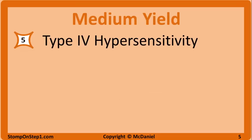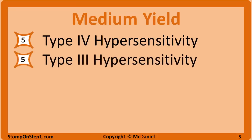Now we're getting into the medium yield topics. With a high yield rating of 5, we have type 4 hypersensitivity. You want to know how it's a delayed response and it's T cell mediated. The most commonly tested scenario is contact dermatitis, but you may also see questions on things like a PPD TB test or MS. Type 3 hypersensitivity — you want to know what immune complexes are and how they can damage tissues in diseases like lupus.